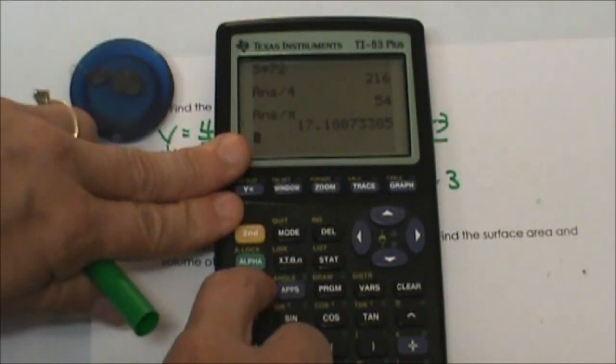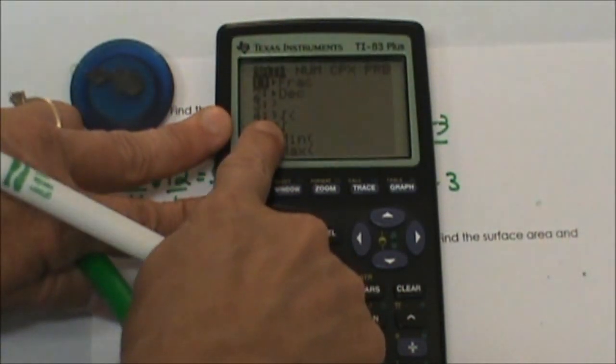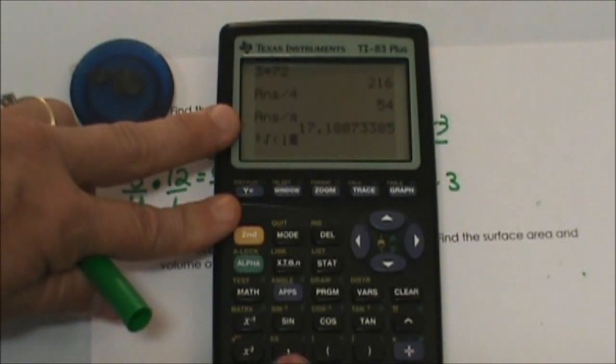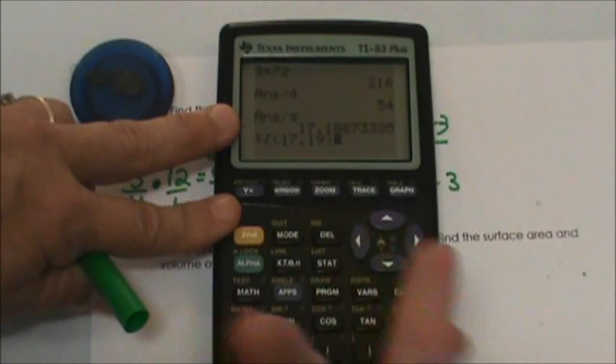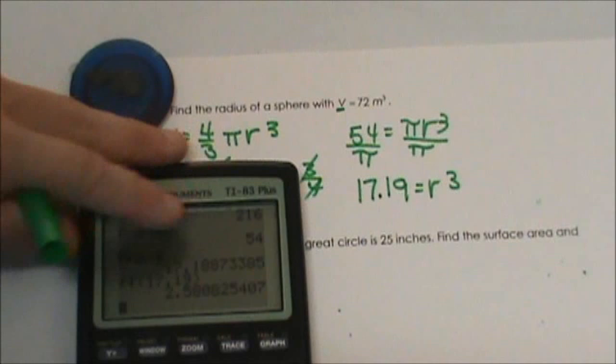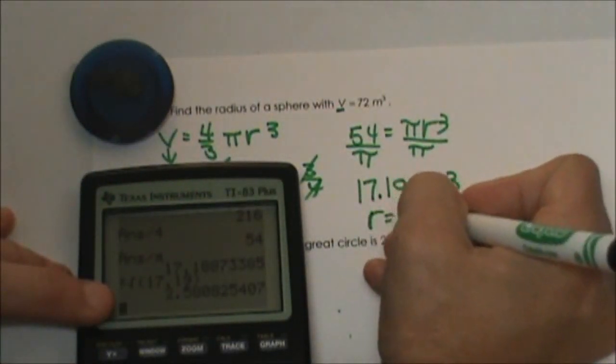We are going to go into the math button and under math the 4th choice is the cube root so you can either choose 4 or go down and click on 4 and then 17.19 and I am typing mine in rather than pulling my answer down because we are rounding it off.